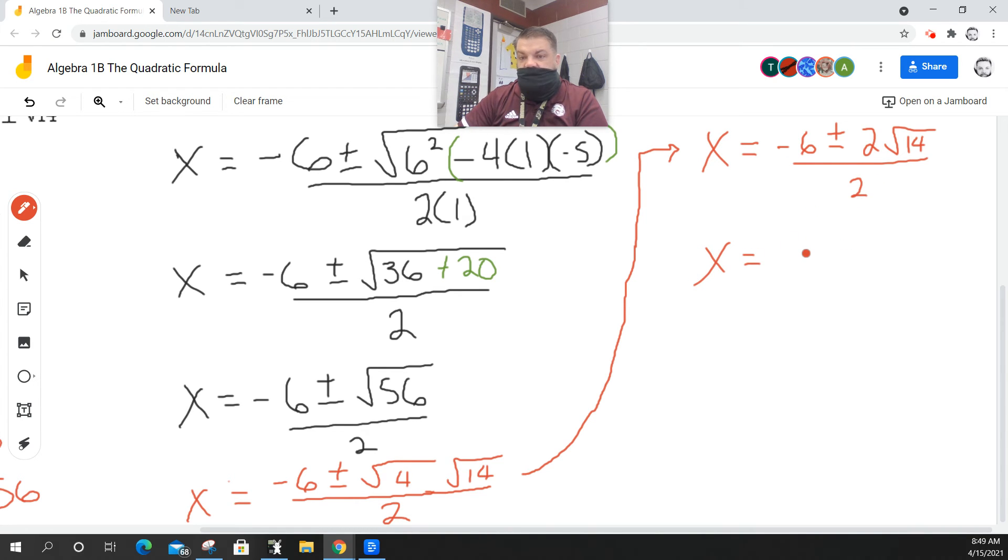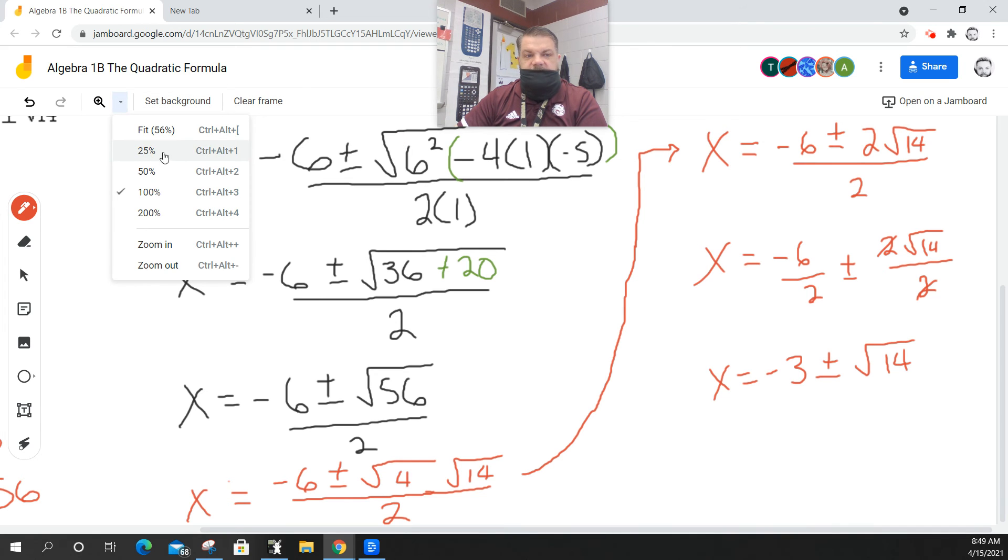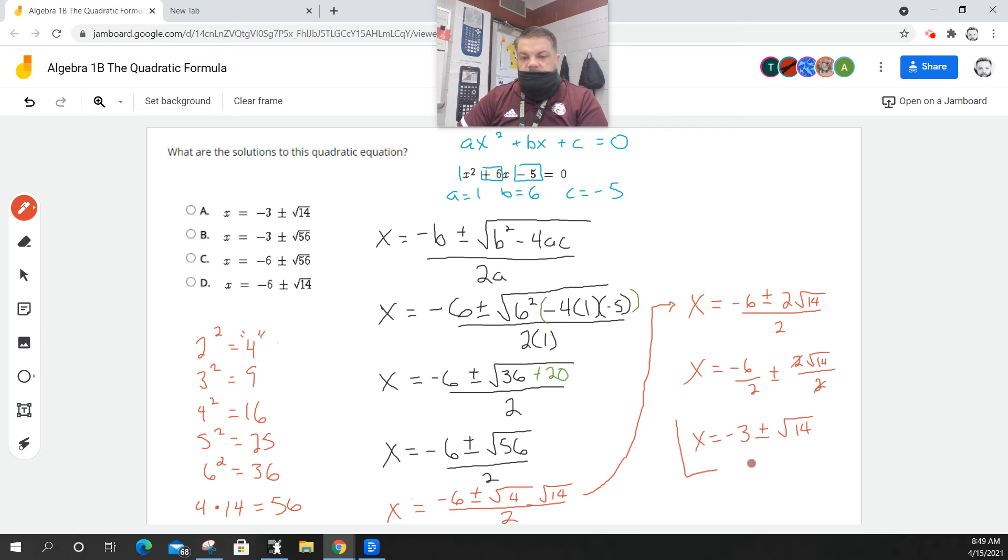I'm writing out each step because I don't want to make a mistake. Now, remember that I can split this up. In other words, I could say negative six over two plus or minus two root 14 over two. So, what is negative six divided by two? Negative three. What is two divided by two? Positive one. What's one times the square root of 14? Square root of 14. Did I have this answer up there somewhere? Let's check. Oh, it's raining outside. So, this is our final answer. And A is the correct answer. Does that make sense?